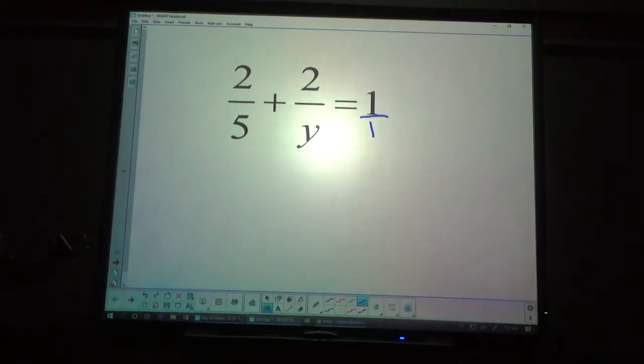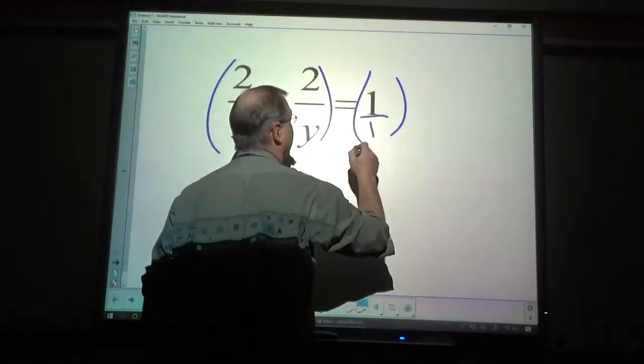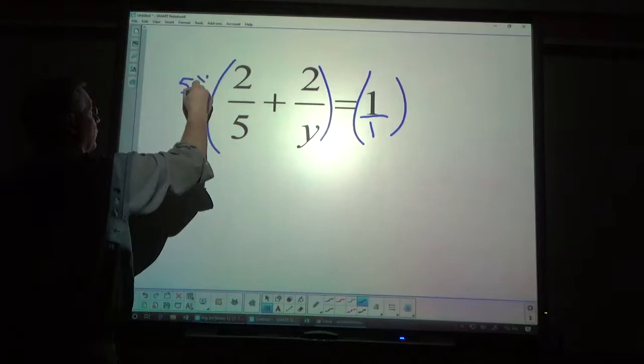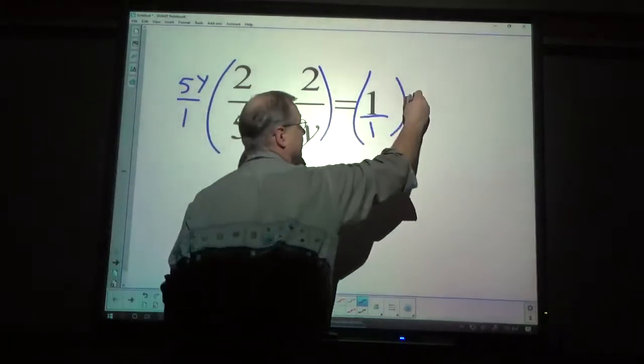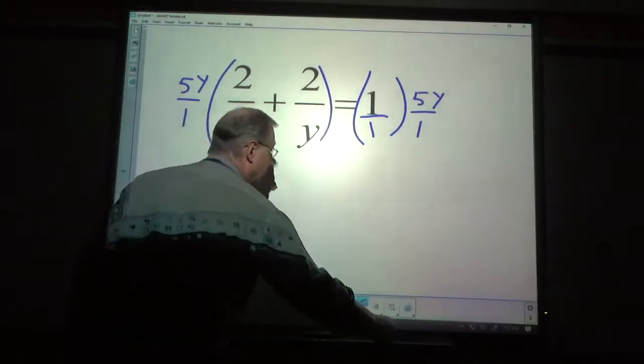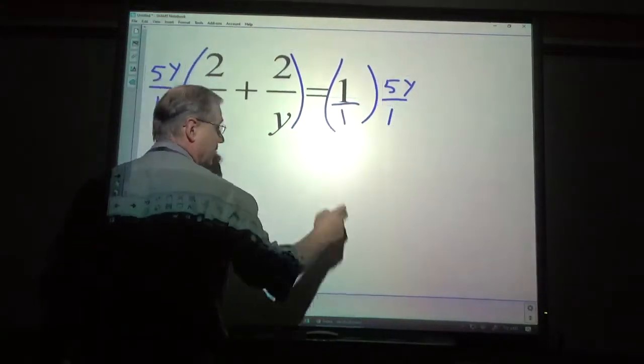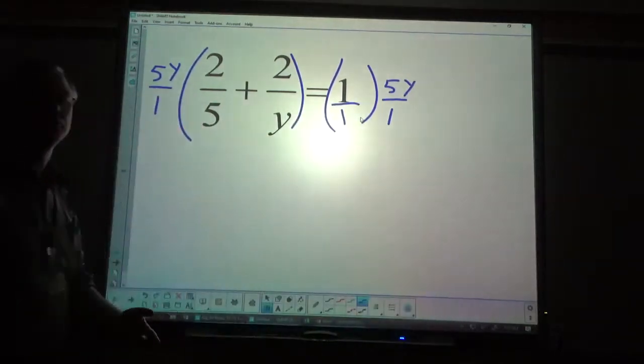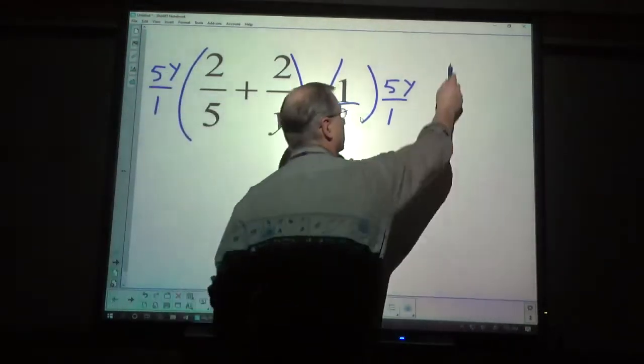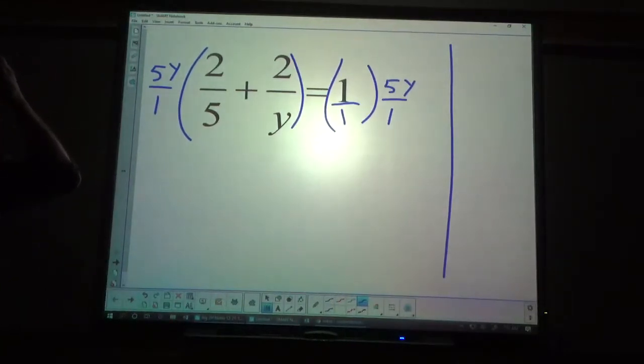So, 5y. So, I'm going to multiply everything on both sides by 5y over 1. Now, if it is helpful for you, you can do some of that work over on the side so that you can see when things cancel out.